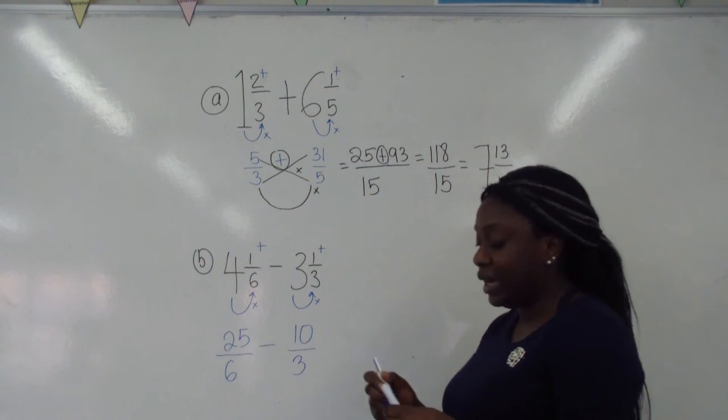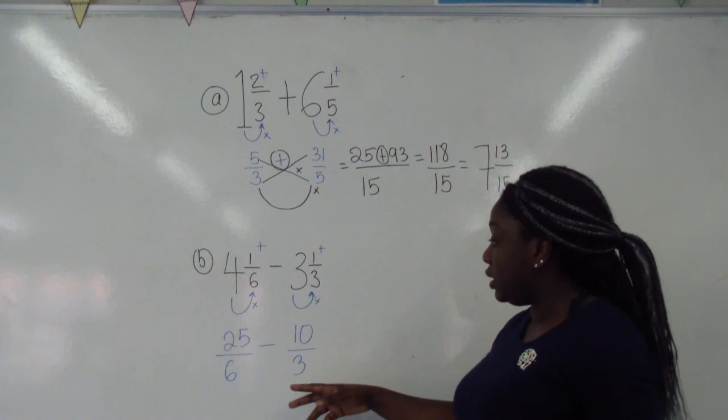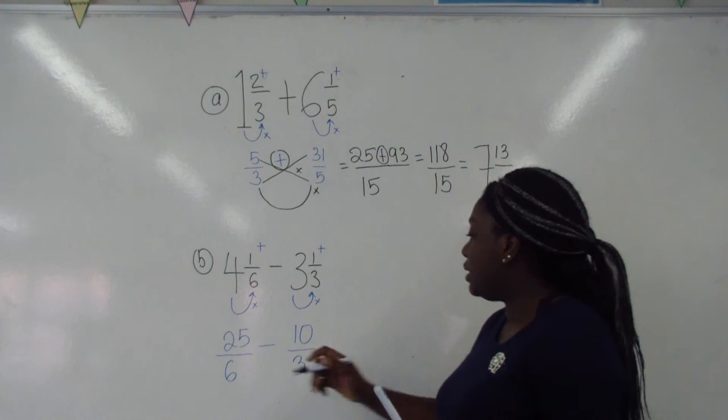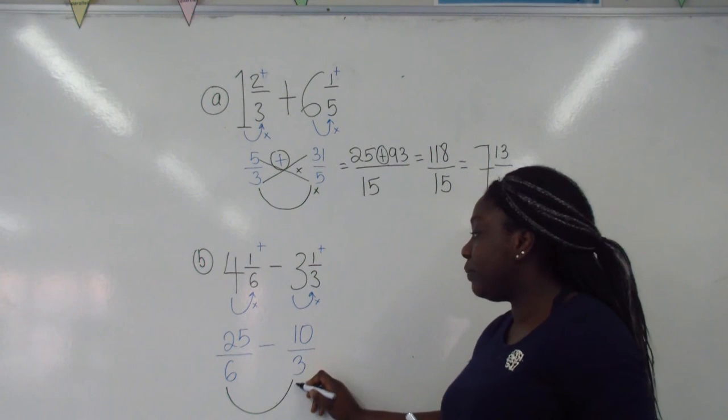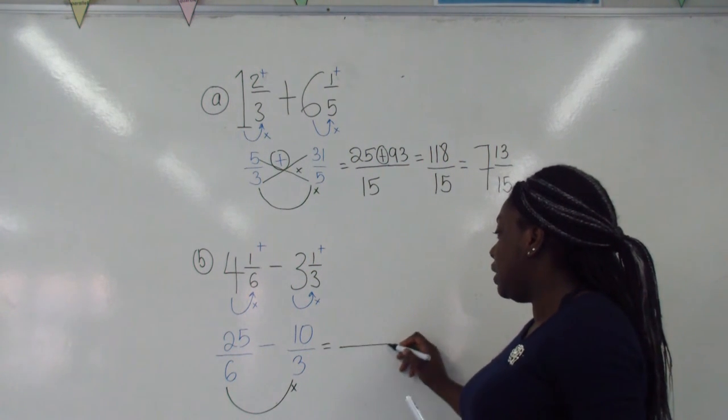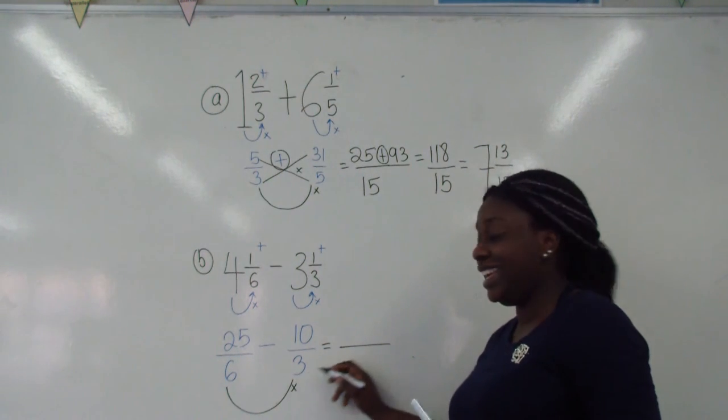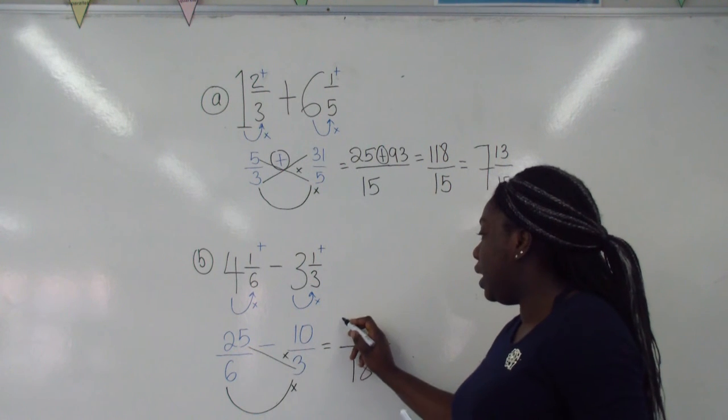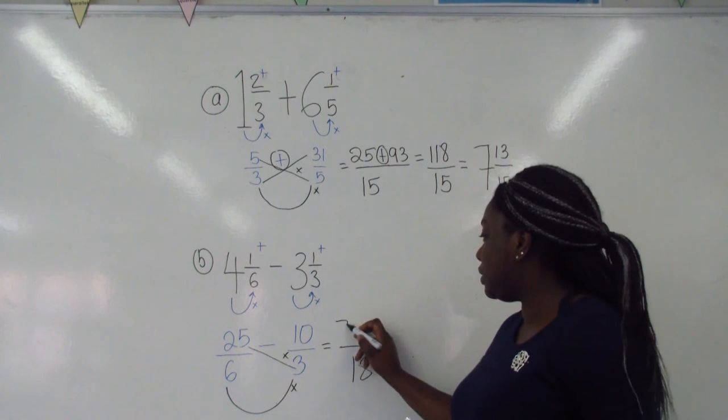Okay, again, to add or to take away fractions, we use the smile and kiss method. To do the smile and kiss, we get 6 and 3 to smile, and we get 18. We get the 25 and the 3 times to kiss themselves, we get 75.